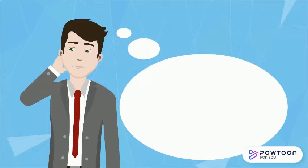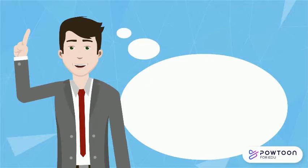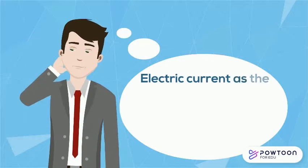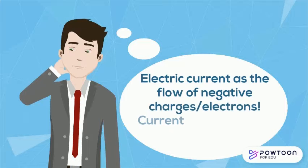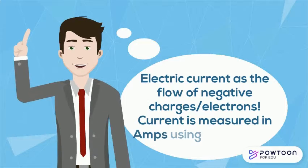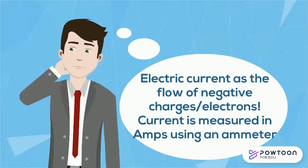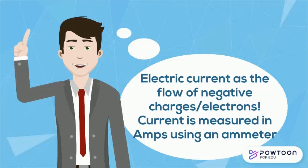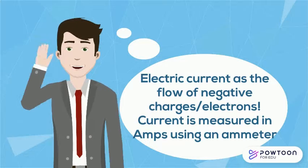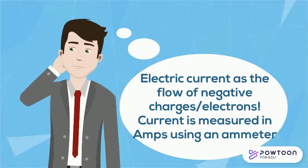First let's find out what electricity is. Electric current is the flow of negative charges or electrons. This current is measured in amps using an ammeter.